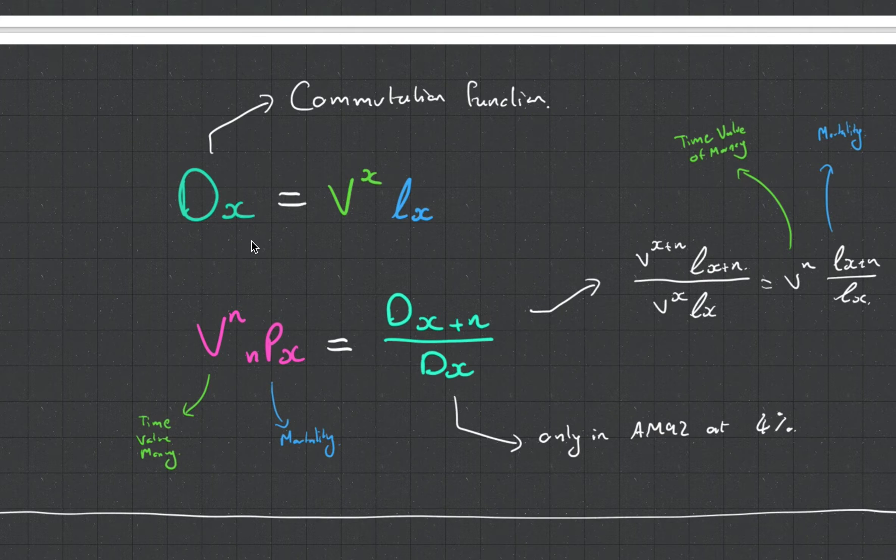And what's cool about these guys is that DX plus N divided by DX is equal to this pink value which we've been looking at previously. And what's cool here is that DX plus N divided by DX removes the X's from the discounting factor, which leaves us with a pure discounting factor based on the term. And at the same time, it generates that NPX value, which you'll know can be represented by LX plus N divided by LX.